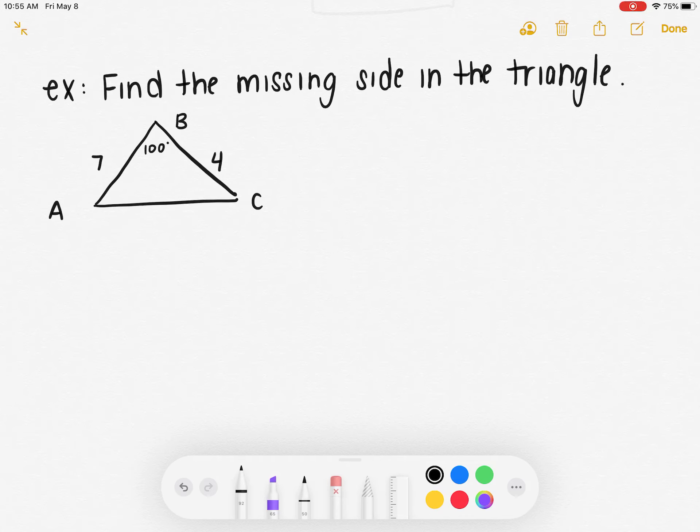This example asks us to find the missing side in the triangle. I notice I have a side, an angle, and a side. So I don't have a full matching set here, and I can't use law of sines. I can only use law of cosines.